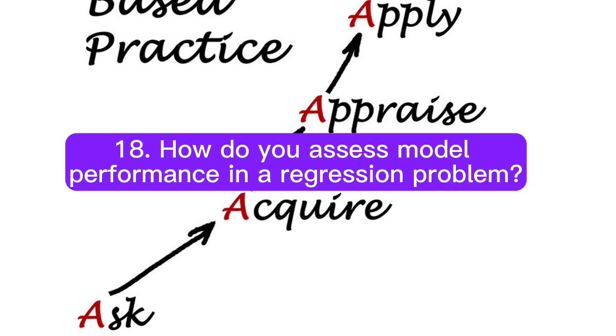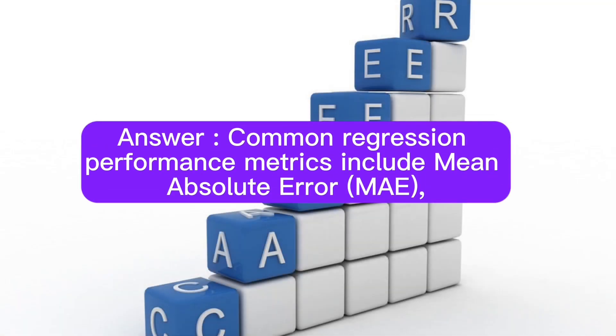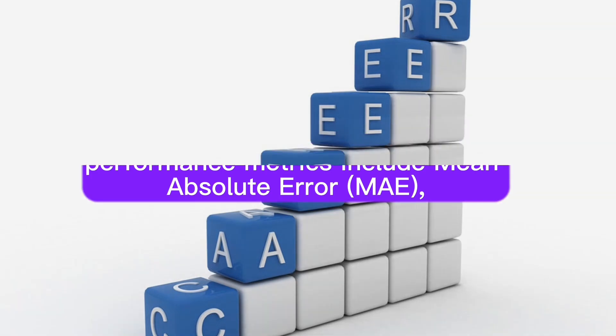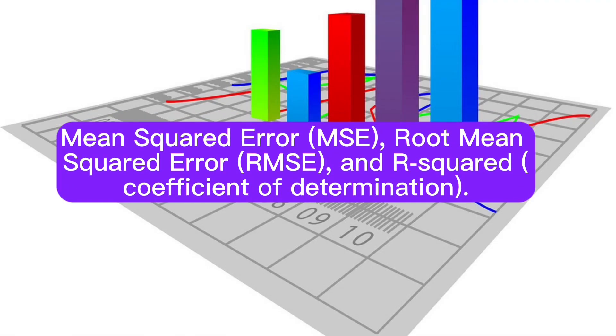Question 18: How do you assess model performance in a regression problem? Answer: Common regression performance metrics include mean absolute error (MAE), mean squared error (MSE), root mean squared error (RMSE), and R-squared coefficient of determination.